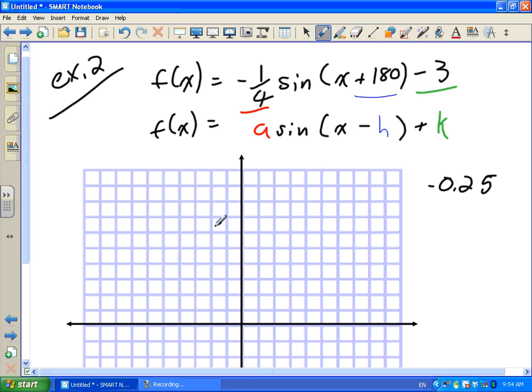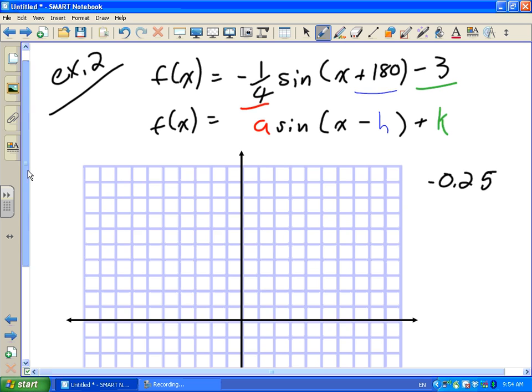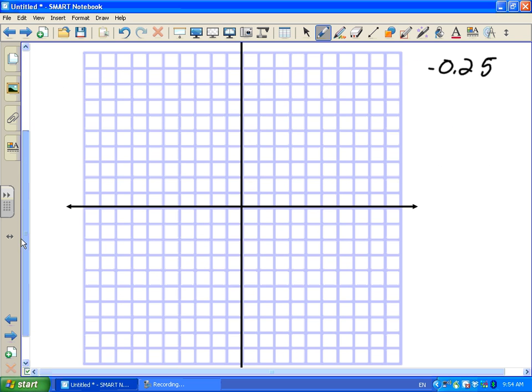So that means I need to move, this graph needs to go to at least 4 on both the Y and the X. Sorry, on both the positive Y and the negative Y. So I'm going to go up by 2's here.